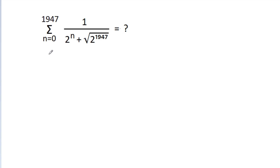In this video, we have to find the value of the summation from n equals 0 to 1947 of 1 divided by 2^n plus the square root of 2^1947.